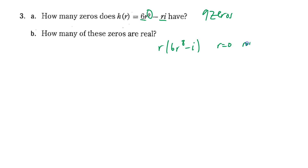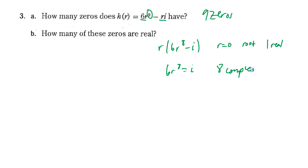So r=0 is one of our roots — that's at least one real zero. For the rest, we'd need 6r⁸ = i, but there's no real number you can raise to the eighth power and multiply by six to get i. Every real number gives a real result, so all the remaining eight roots must be imaginary — eight complex roots and just one real root, which is zero.